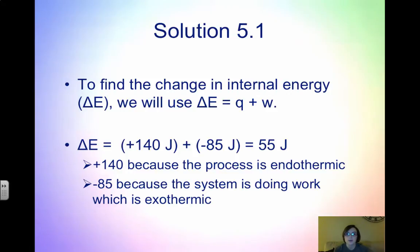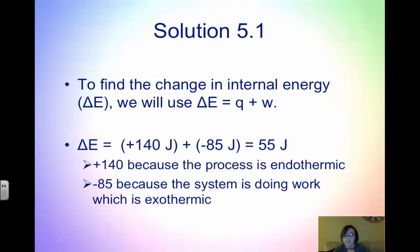The solution: to find the change in internal energy, which is delta E, we use delta E equals Q plus W. Q is positive 140 joules because the energy was absorbed — so it's endothermic. Work is negative 85 joules because the system is doing the work; when the system does the work, it's negative. Adding those together, you get positive 55 joules. Remember you need a sign, a number, and a unit.